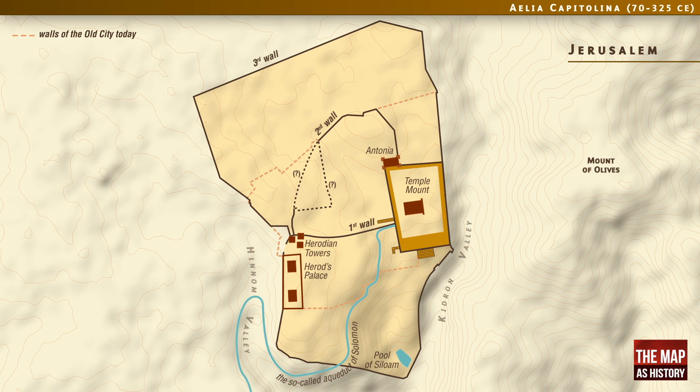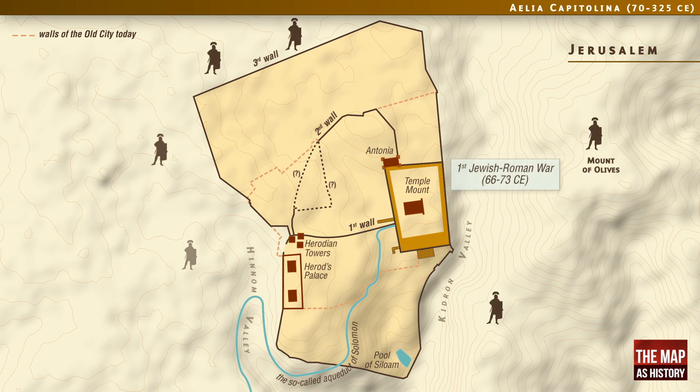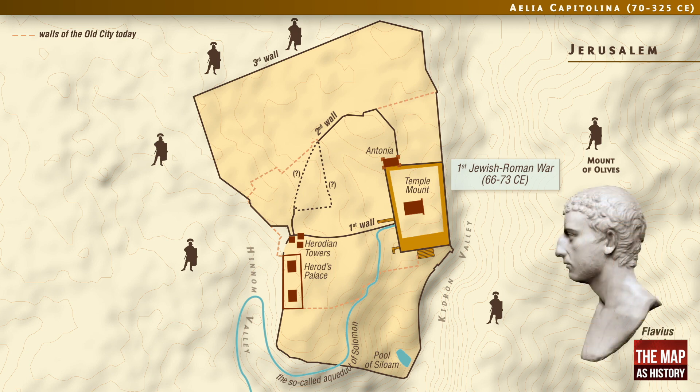The two decisive events in the Jewish-Roman War, which put an end to the first Jewish uprising against the Empire, were the siege and capture of Jerusalem by Titus' legions in 70 CE. This episode was described in great detail by the Jewish historian Flavius Josephus, who was present during these events. To avoid the natural obstacles formed by the deep valleys to the west, south and east, the Roman army launched their attack against the northern wall of the city.